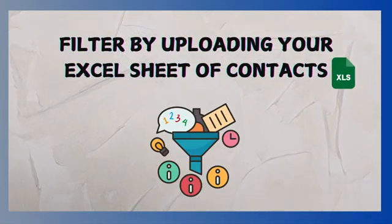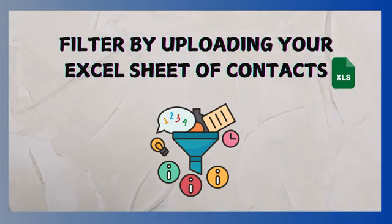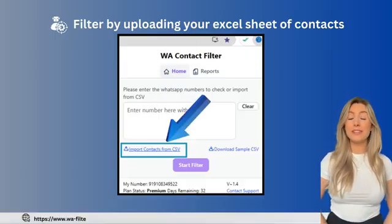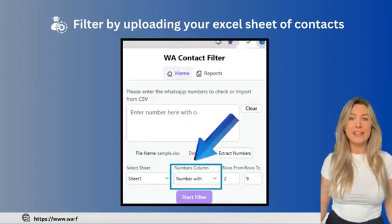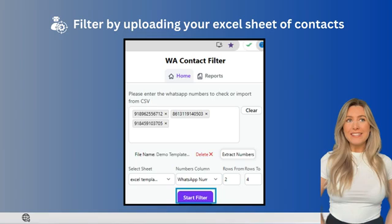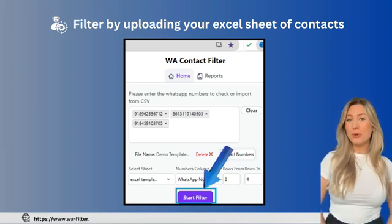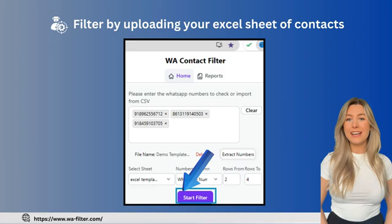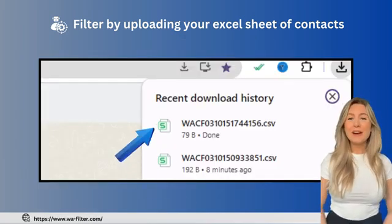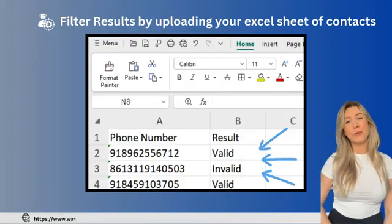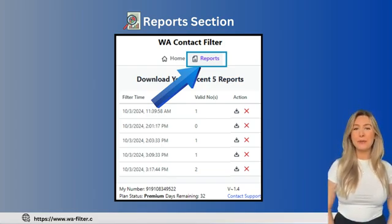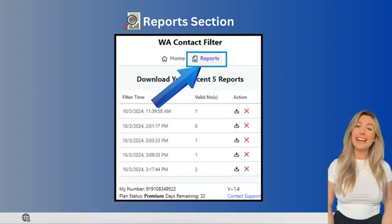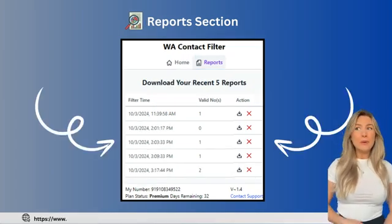Method 2: Filter contacts by uploading an Excel file. Once the interface opens, look for the option labeled Import or Upload CSV to get started. Choose the correct sheet, then select the column containing the contacts you want to filter. Once everything is set, click the Start Filter button. The tool will go through the list and check each contact for validity, then automatically download a report showing which contacts are valid and which aren't. Moving on to the Reports section — look for it on the WA Filter interface, click on it to access a list of all your past reports, organized and ready to review or download.